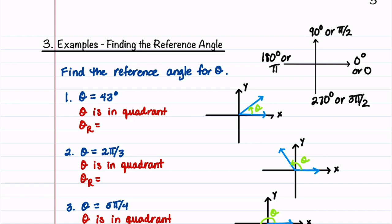In our first example, we're asked to find the reference angle for an angle of 43 degrees. We look at the quadrant and see that theta is in quadrant 1. Our theta sub r is equal to theta, which is 43 degrees, and we'll indicate on our graph that theta equals theta sub r.